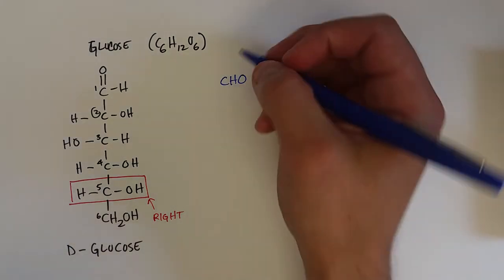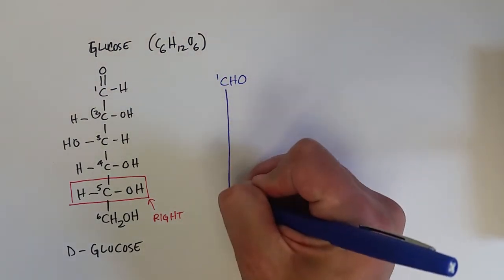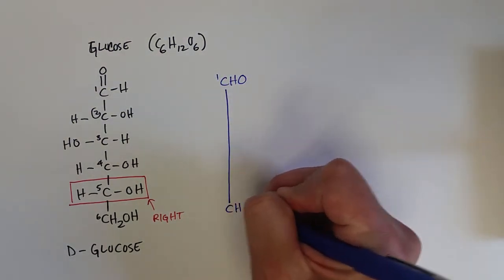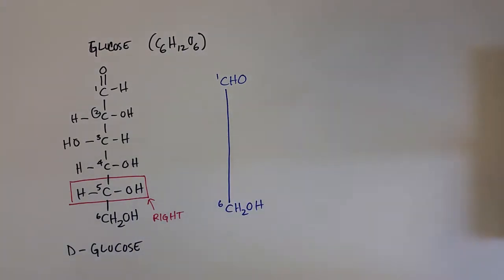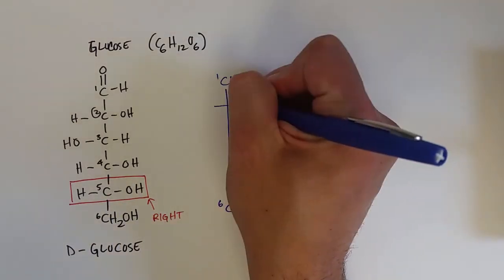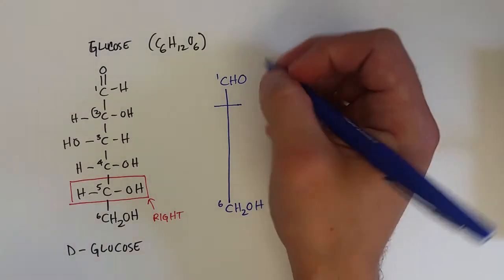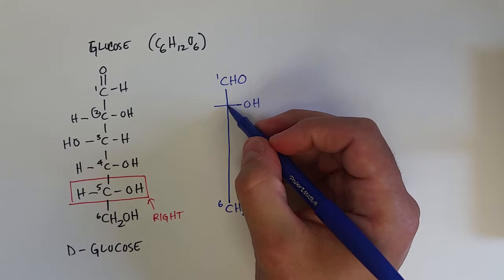The first carbon is an aldehyde, so I'm still going to write that out, and then the last carbon is always written. So the sixth carbon is written, but instead of drawing all the carbons in the middle, I can just draw a sort of line through that, noting that...